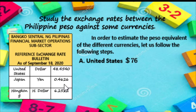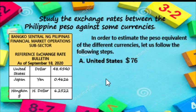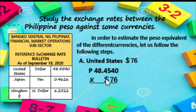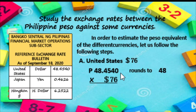Let us estimate the Peso equivalent of $76. We are going to multiply it by 48.4540. To estimate, we need to round off to the nearest whole number. So 48.4540 rounds to 48, and $76 rounds to 80.